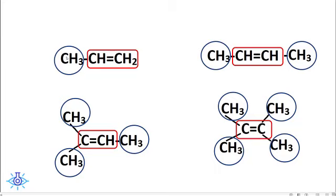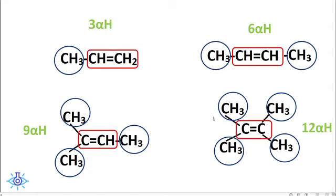The hydrogen atoms attached to the alpha carbon are called alpha hydrogens. The first compound has three alpha hydrogens, the second has six, the third has nine, and the fourth has twelve alpha hydrogen atoms. The more the number of alpha hydrogen atoms, the more stable the compound is. Therefore, compound four with twelve alpha hydrogens is the most stable.